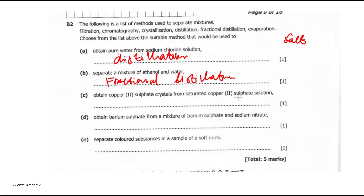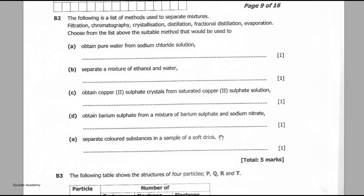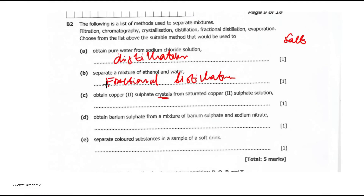Next: obtain copper(II) sulfate crystals from a saturated copper(II) sulfate solution. We want to obtain crystals from the saturated solution, so this would be crystallization.